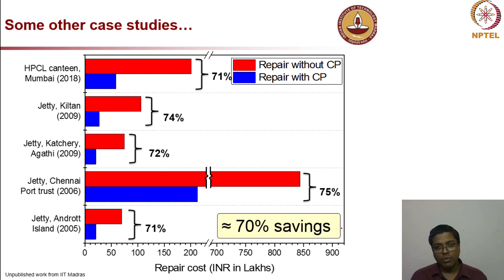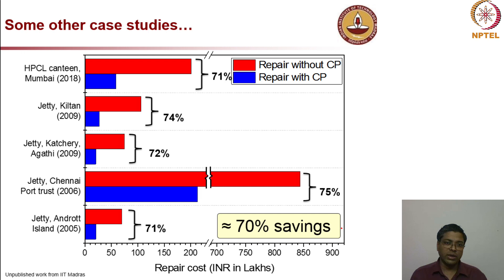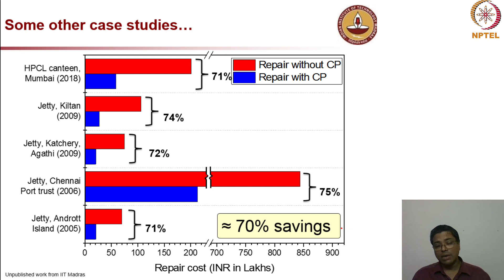Real case study data from a canteen building in Mumbai and multiple jetty structures show about 70% cost saving when going for a cathodic protection system compared to conventional repair. That is very significant — both for a single repair event and even more so for life cycle cost.